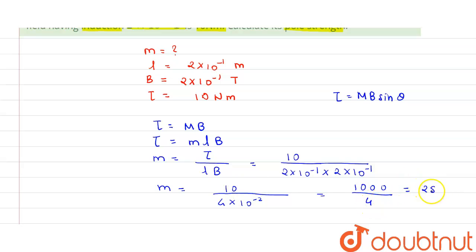This is equal to 250 ampere meter. The pole strength is 250 ampere meter. Thank you.